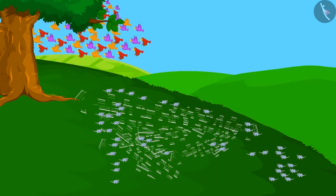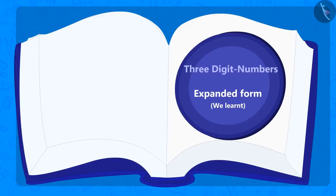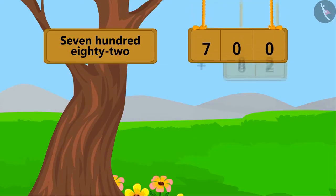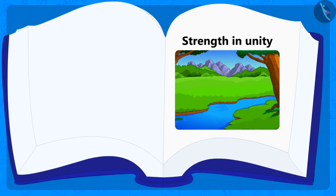So, children, you saw that there is a lot of strength in unity. Children, we learnt to write the expanded form of three-digit numbers with the help of number name. We also learnt that there is always a lot of strength in unity.